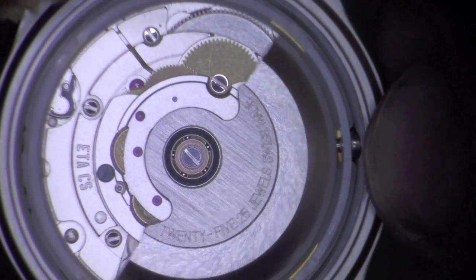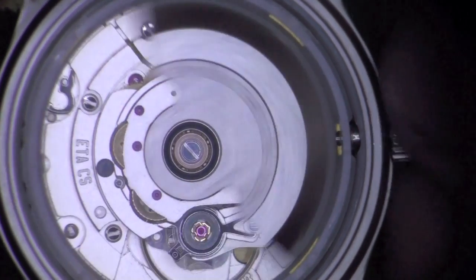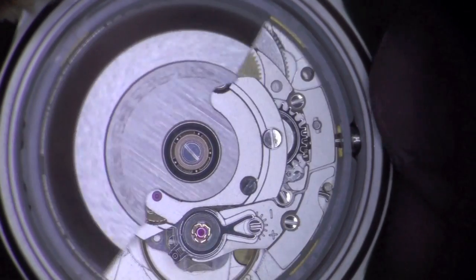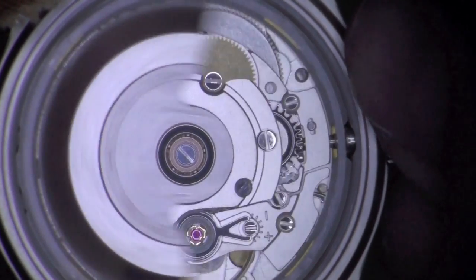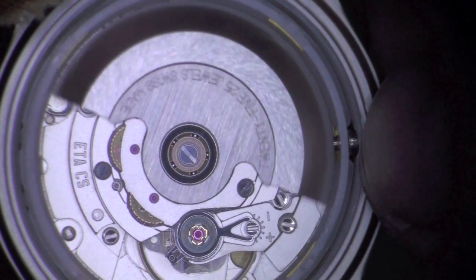This is an example of what can happen when your reversers are dragging. When one reverser has more resistance than the other, it will drive the oscillating weight during manual winding. In addition to being inefficient, this is often also felt by the customer.